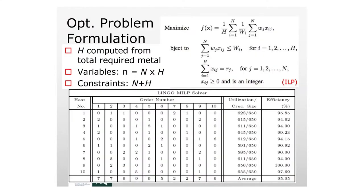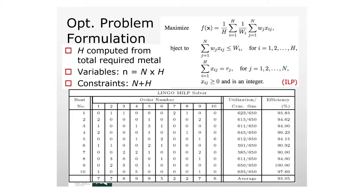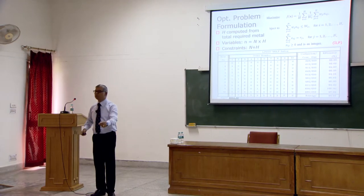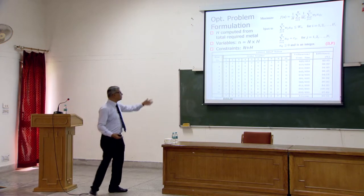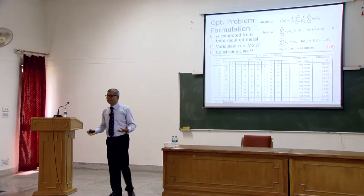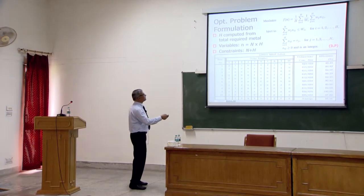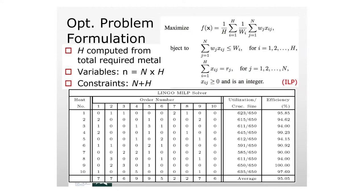We formulated the problem mathematically. The variable x_ij is a matrix: from the i-th heat, how many copies of the j-th casting are you going to make? You have an objective function to maximize metal utilization. Constraints say: for every heat, the total material used must be less than or equal to 650 kilos. And for each casting type, the total number produced across all heats must equal exactly the required order quantity — not one more, not one less.